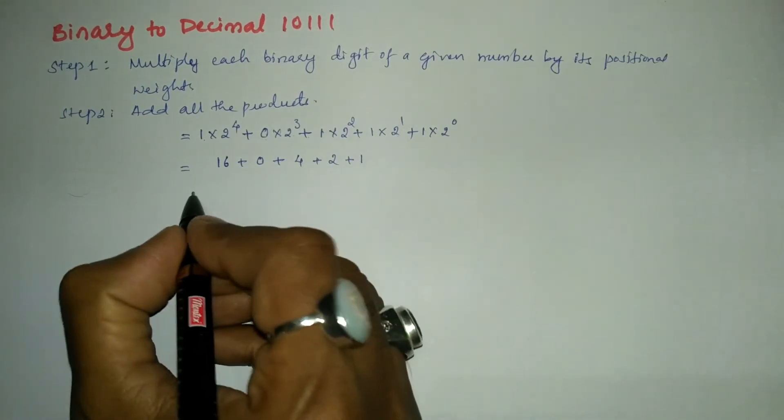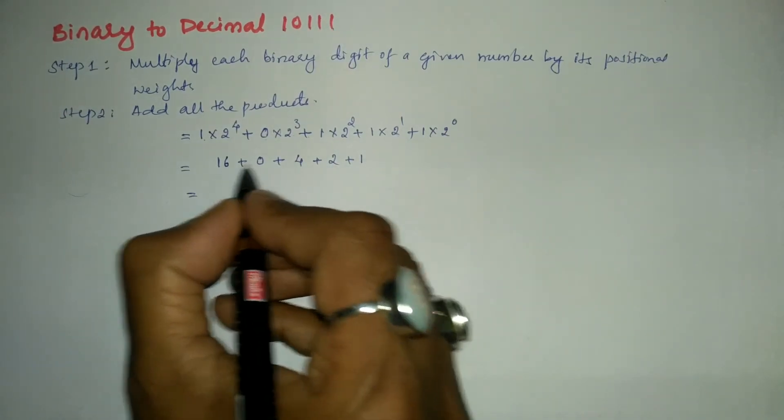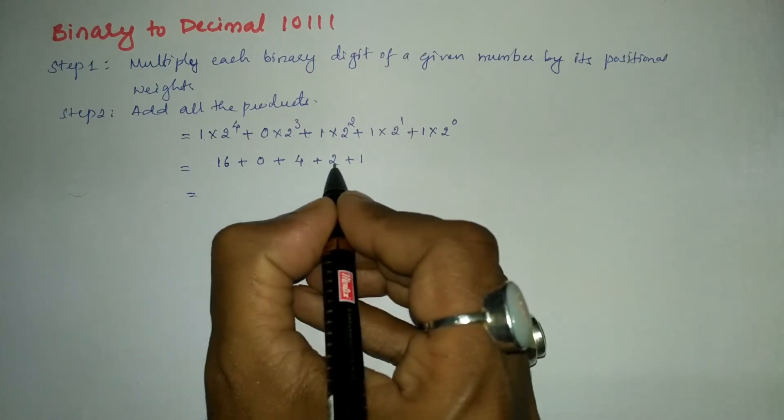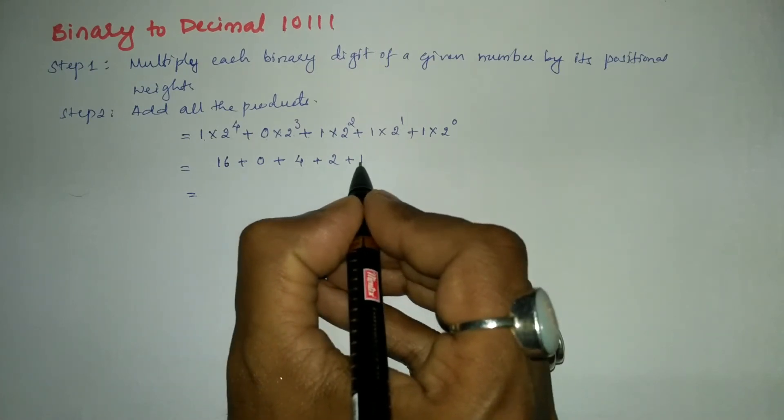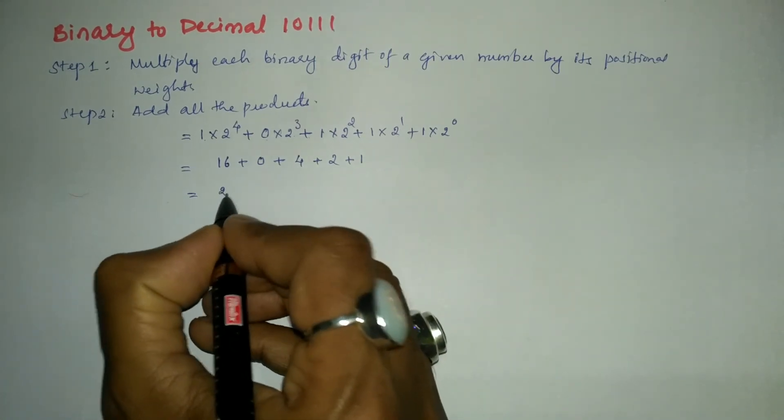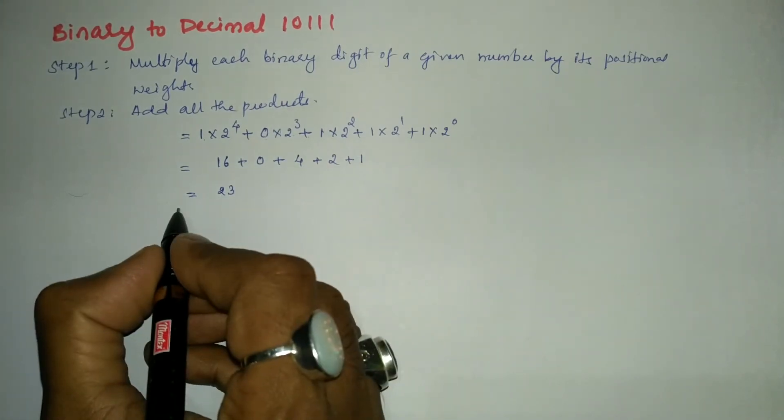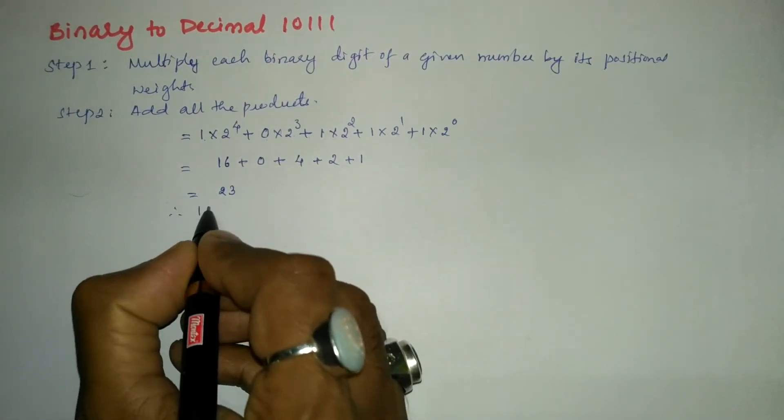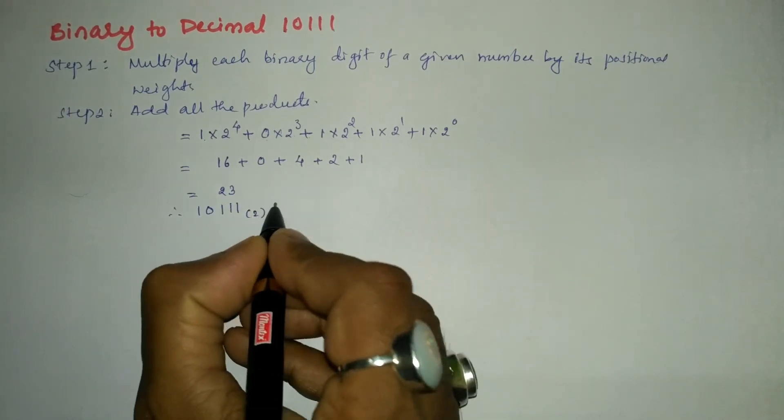Now let us add: sixteen plus four is twenty, twenty plus two is twenty-two, twenty-two plus one is twenty-three.